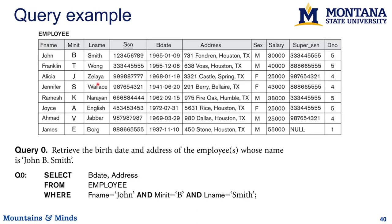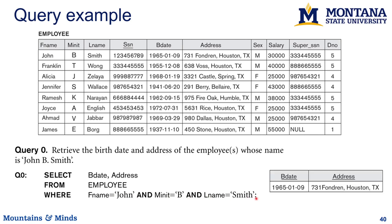For example, if we want the birthday and address of an employee named John B. Smith, we would say: SELECT birthday, address FROM employee WHERE first_name = 'John' AND minit = 'B' AND last_name = 'Smith'. When we run this, we get the answer.